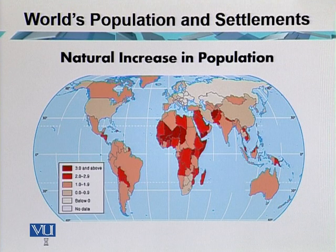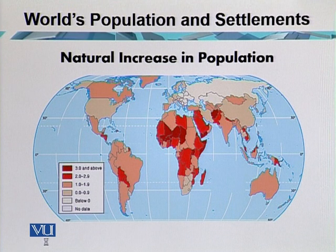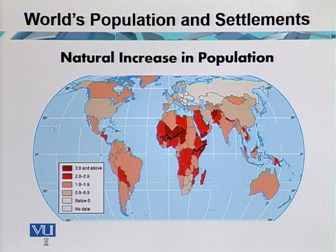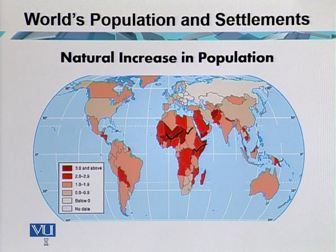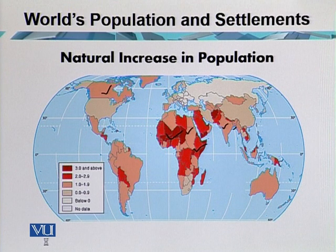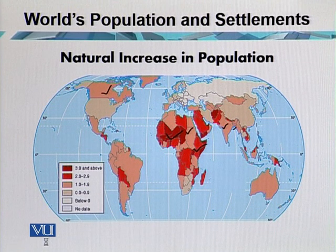This map shows the natural increase in population. Most of the areas in darker shade are regions with weaker economies. For example, African nations have more than 3% annual growth rate — births are high, deaths are also high, but births are so much higher that growth rate has gone up. Fast growing nations also include countries in Africa, India, and Bangladesh. Canada's growth is due to immigration rather than natural increase. Countries with 2–2.9% growth mostly belong to Africa, and 1–1.9% belongs to South America also.